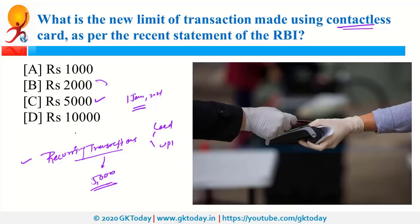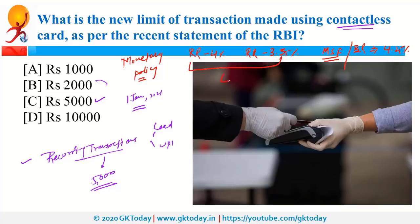Recently, RBI was also in news because of its monetary policy. As per the recent monetary policy statement, the Repo rate is 4%, Reverse Repo is 3.35%, and MSF — that is Marginal Standing Facility — and Bank Rate is 4.25%. These are part of LAF, that is Liquidity Adjustment Facility.